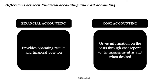Financial accounting provides operating results and financial position — operating results in the form of the profit and loss account, showing whether the business earned profits or losses for the financial year, and financial position depicted by the balance sheet prepared at the end of the financial year. When it comes to cost accounting, it gives information on costs through cost reports to the management as and when desired. Cost accounting is prepared as per the requirements of the management, and cost reports are prepared as and when management requires information to take decisions.